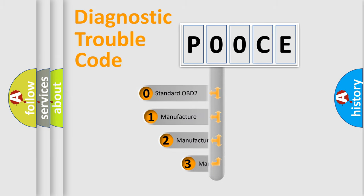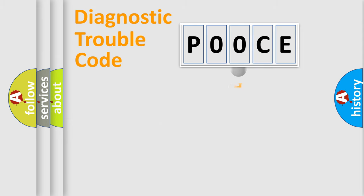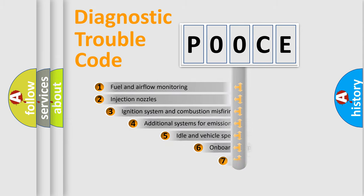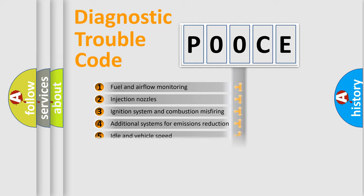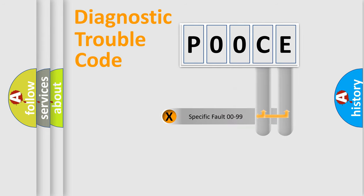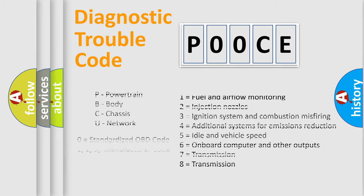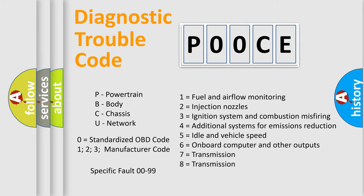If the second character is expressed as zero, it is a standardized error. In the case of numbers 1, 2, or 3, it is a manufacturer-specific error expression. The third character specifies a subset of errors. This division is valid only for the standardized DTC code, and only the last two characters define the specific fault of the group.